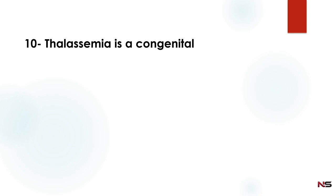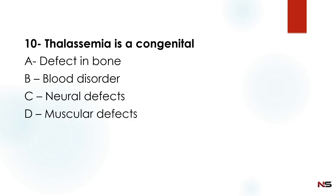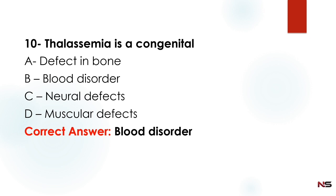Thalassemia is a congenital — Option A: inborn defect, Option B: blood disorder, Option C: neural defects, Option D: muscular defects. The correct answer is option B — blood disorder. Thalassemia is a congenital blood disorder.